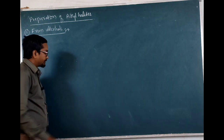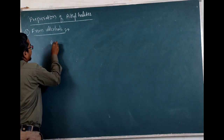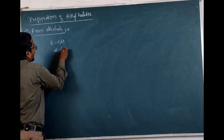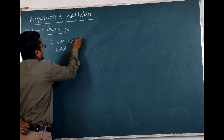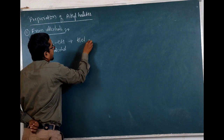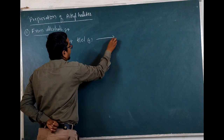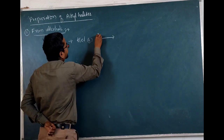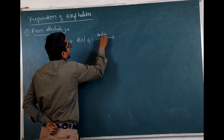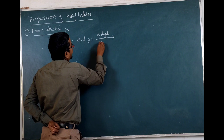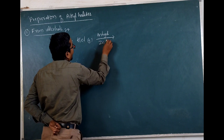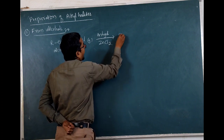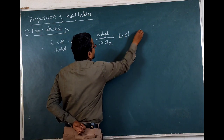Let us see how alcohol — generally we represent alcohol as ROH — reacts upon treating with hydrogen chloride gas. Here we require a Lewis acid, that is anhydrous ZnCl2. It will lead to the formation of alkyl halide: RCl plus H2O.